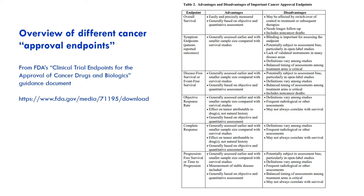Other endpoints like how much of a drug is in a patient's blood at a given time are important for understanding how to use the drug in clinical practice and how to design clinical studies, but they're not approvable endpoints because they don't really correlate with clinical benefit.